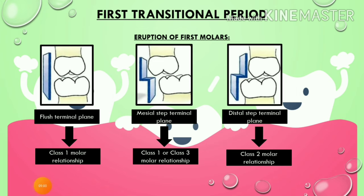Hence, whenever we examine the type of terminal plane in a patient, we can judge the molar relationship that will be achieved. Flush terminal plane predicts Class 1; mesial step predicts Class 1 or Class 3 if mandibular growth is excessive; and distal step predicts Class 2 molar relationship for the permanent first molars.